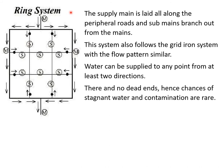In the circular or ring system, the water supply main is laid along peripheral roads, and sub-main supply lines are branched out from it. This system follows a flow pattern similar to the grid-iron system. Water can be supplied to any point from at least two directions, there are no dead ends, and hence chances of stagnant water and contamination are very rare. The ring or circular loop is maintained at the external periphery of the area catered, with sub-mains branching further to individual units.